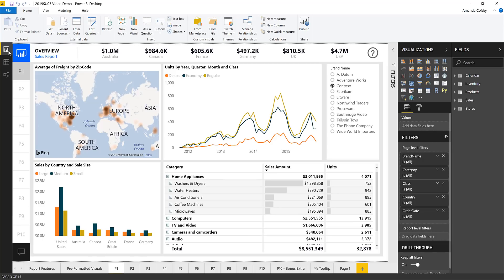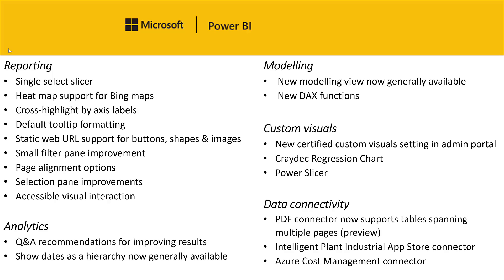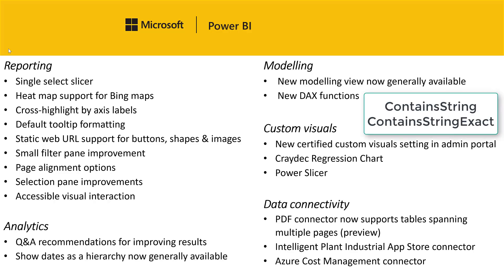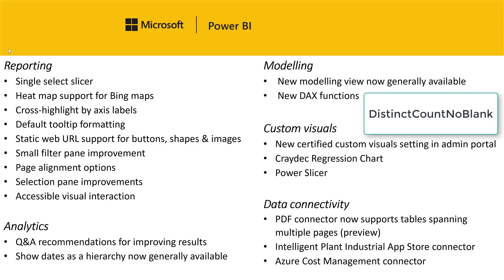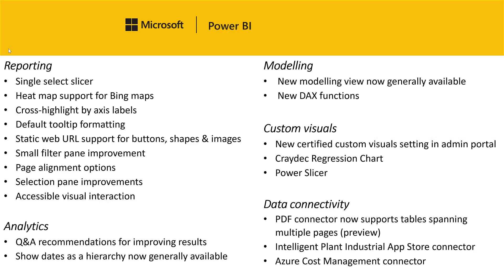We also have some DAX updates this month. The ones I'm most excited about are new functions called containString and containStringExact, which return a Boolean value indicating whether a text field contains a specific string — containStringExact is case sensitive. Another new function is distinctCountNoBlank, which returns a SQL-like distinct count where blank values aren't counted. We've also extended the lookupValue function to take an optional last parameter to avoid raising an error, and extended the ALL function so that ALL without arguments will clear all filters in the filter context. IntelliSense support for all these functions except the ALL updates and distinctCountNoBlank will come in the April release.